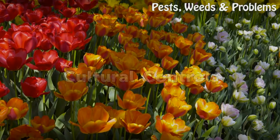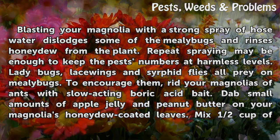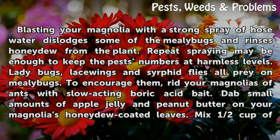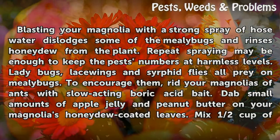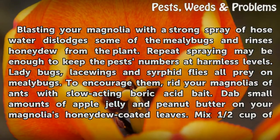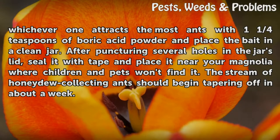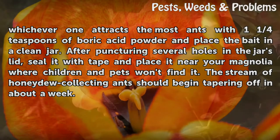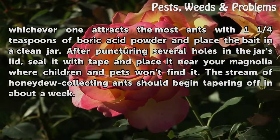Cultural controls. Blasting your magnolia with a strong spray of hose water dislodges some of the mealy bugs and rinses honeydew from the plant. Repeat spraying may be enough to keep the pests' numbers at harmless levels. Ladybugs, lacewings and syrphid flies all prey on mealy bugs. To encourage them, rid your magnolias of ants with slow-acting boric acid bait. Dab small amounts of apple jelly and peanut butter on your magnolia's honeydew-coated leaves. Mix half a cup of whichever one attracts the most ants with 1¼ teaspoons of boric acid powder and place the bait in a clean jar. After puncturing several holes in the jar's lid, seal it with tape and place it near your magnolia where children and pets won't find it. The stream of honeydew-collecting ants should begin tapering off in about a week.